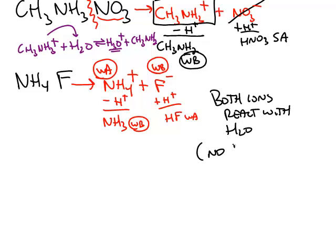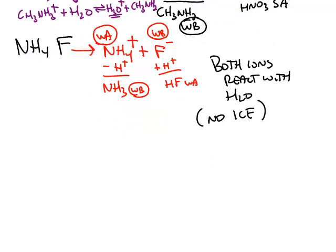compare the Ka and the Kb. Whichever one is larger, that's going to be the one that controls the pH. We can find the Ka of NH4+: that's Kw divided by Kb of its conjugate NH3.